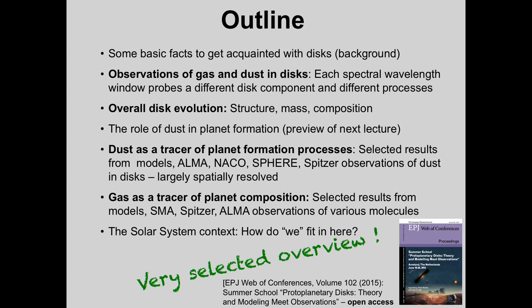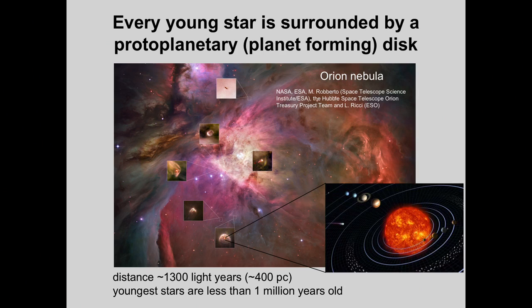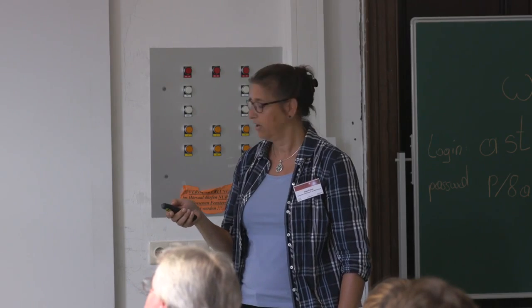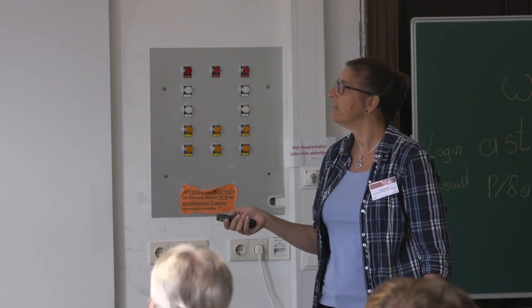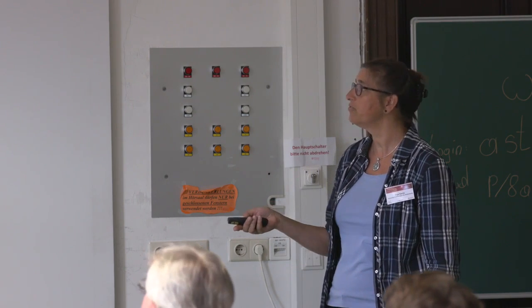Circumstellar disks: some basic facts. These disks form in star-forming regions, and every young star is basically surrounded by a disk—that is what we learned from the Hubble Space Telescope looking at the Orion Nebula. Many young stars there are surrounded by nebulosities, each of which you can think of as a planetary system forming. This region is about 400 parsec away, 1,300 light years. The young stars are less than 1 million years old, with no mature planetary systems, still containing a lot of primordial material.